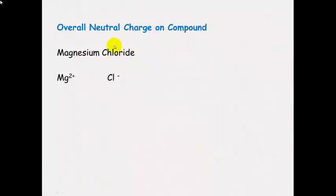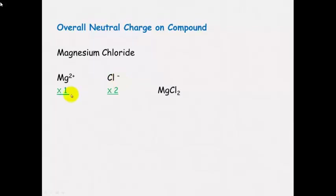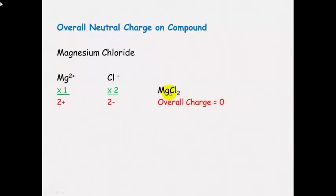When writing ionic formulae, it's important that the overall charge on the compound is neutral — it has no overall charge. When magnesium and chloride form a compound, magnesium has a 2 plus charge and the chloride ion has a 1 negative charge. If we have 1 magnesium and 2 chlorides, we get a 2 positive total from magnesium and a 2 negative total from the chloride ions, so the overall charge is 0. So we need 1 magnesium, indicated by no number, and 2 chloride ions, shown by a little 2 next to the chloride.